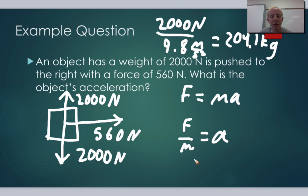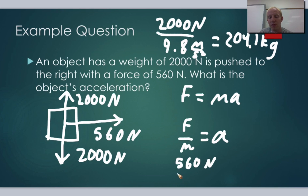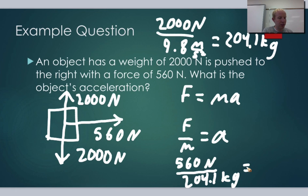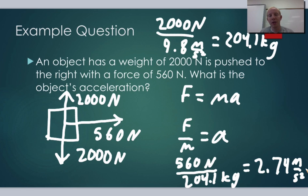Then we plug it into F over M equals A. We take the net force of 560 newtons and divide it by 204.1 kilograms. 560 divided by 204.1 gives us an acceleration of 2.74 meters per second squared. So this object will accelerate at 2.74 meters per second squared. This is a very common scenario where you're given a weight rather than a mass and then have to plug it into F equals MA.